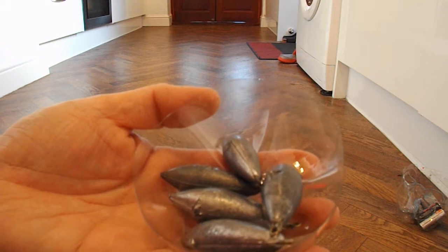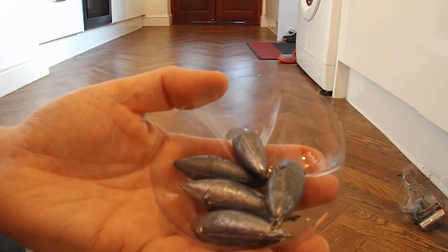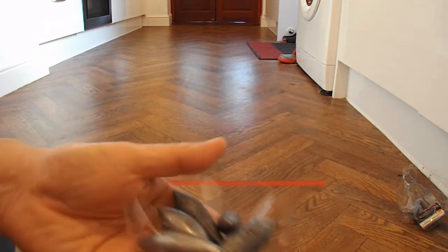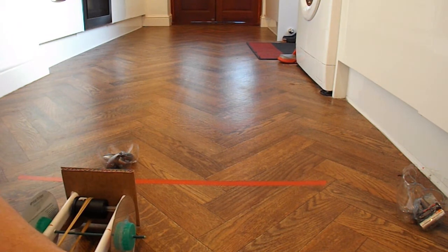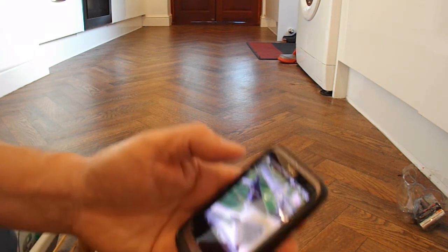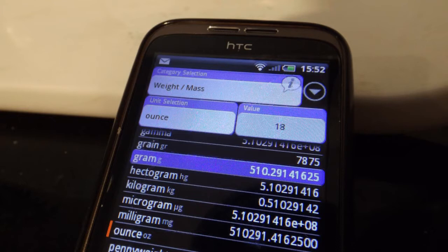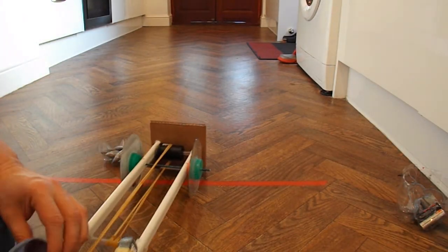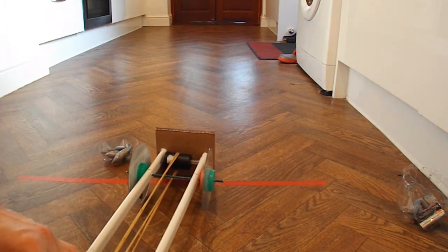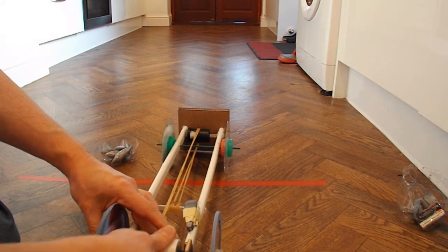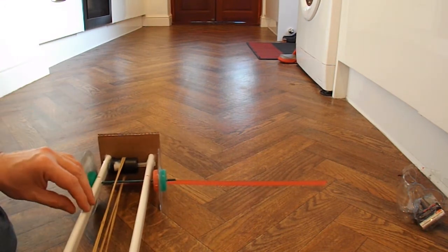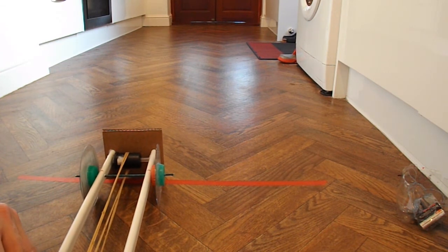Right, in here I've got three 4-ounce lead weights and two 3-ounce lead weights. That's 18 ounces of lead. Which according to my calculator, I don't know if you can see that. 18 ounces is 510.29 grams. So we're over the 500. So I'll just wind this up as far as I dare. Let's see how far we can go.